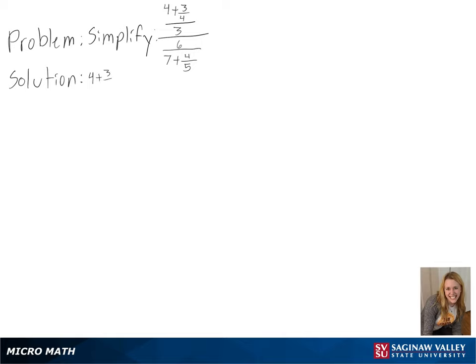Our problem is to simplify 4 plus 3 fourths divided by 3 over 6 divided by 7 plus 4 fifths.